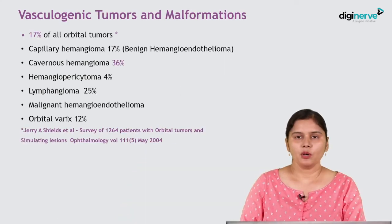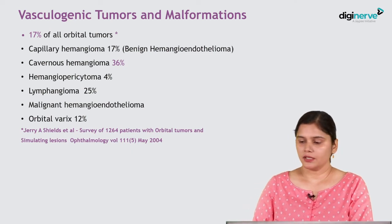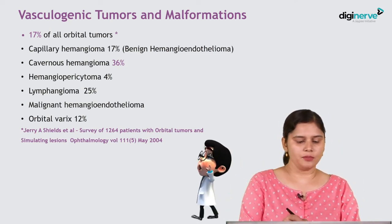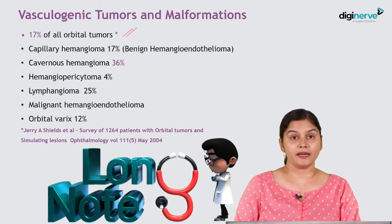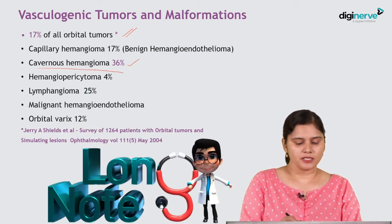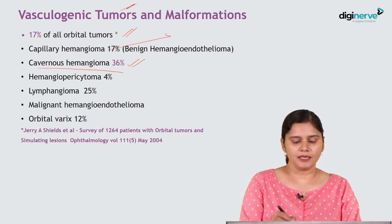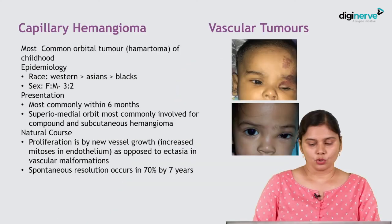The congenital cystic eye may need to be removed and an artificial eye inserted. Vasculogenic tumors account for 17% of all orbital tumors in adults. Cavernous hemangioma is the most common vasculogenic tumor in adults, while capillary hemangioma is the most common vascular tumor in children.